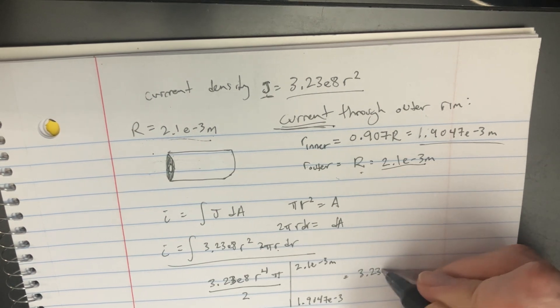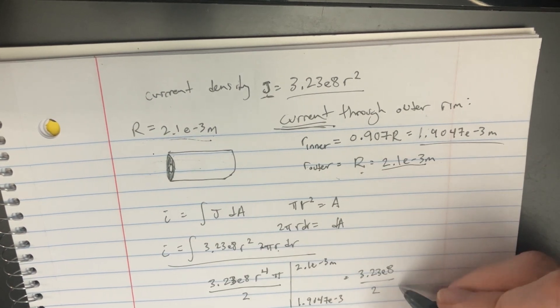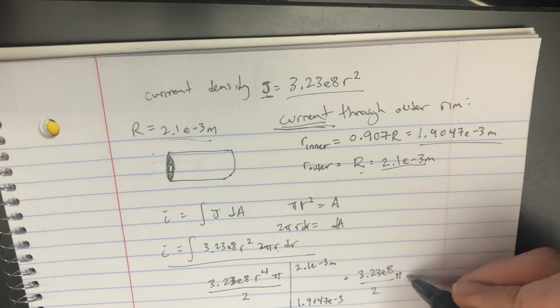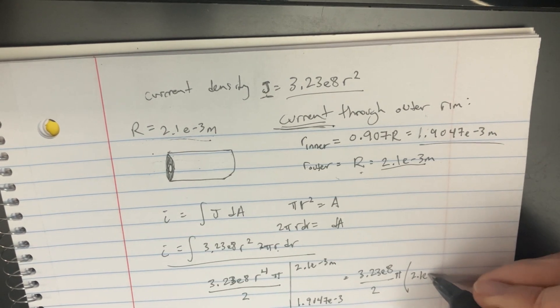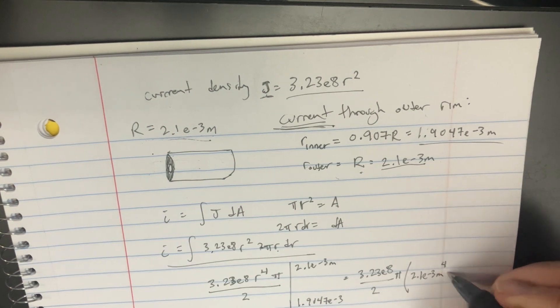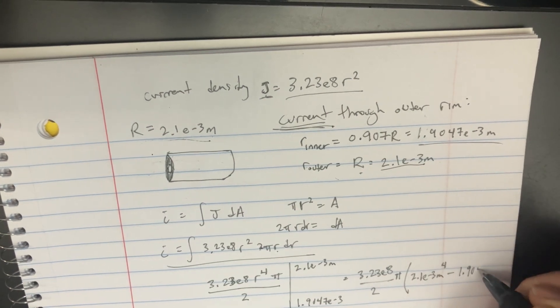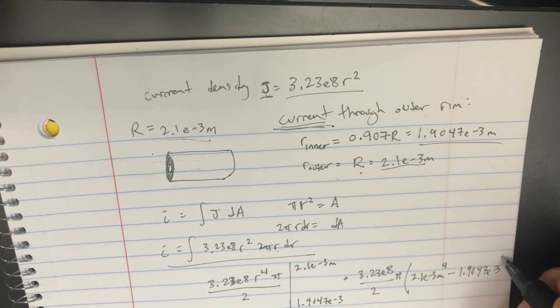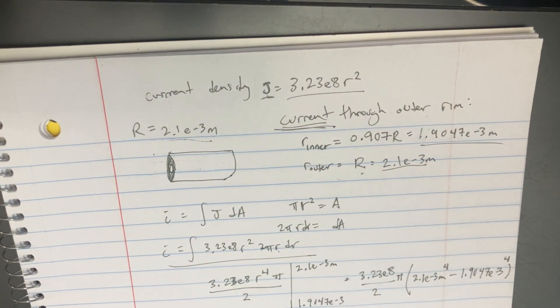We've got 3.23e8 divided by 2, there's a π in there, and then it's r⁴, so it's 2.1e-3 to the fourth minus 1.9047e-3 to the fourth. We'll plug that into the calculator.